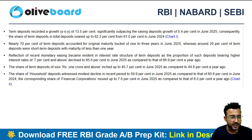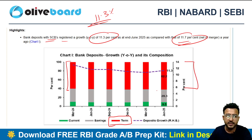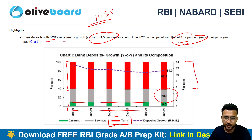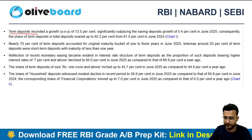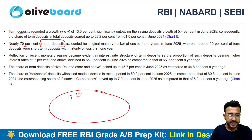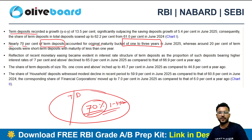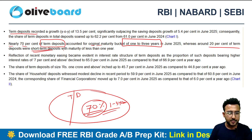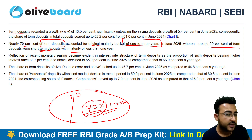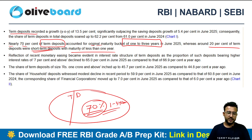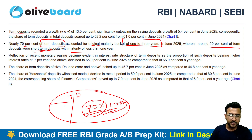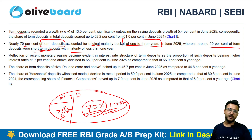Term deposits are significantly outpacing any other deposit category. Among term deposits, nearly 70% fall in the one-to-three-year original maturity bucket. Around 20% of term deposits are short-term deposits with maturity less than one year. The remaining approximately 10% have maturity of more than three years. So the maturity composition is: 70% one-to-three years, 20% less than one year, and 10% more than three years.